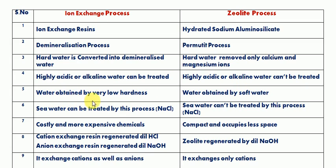In the ion exchange process, the water obtained has very low hardness, almost 0 ppm — it is completely ion-free water. In the zeolite process, the output is soft water with only some amount of hardness removed; hard water is converted into soft water.